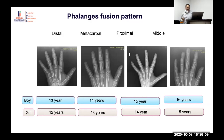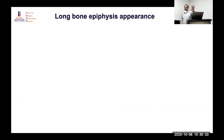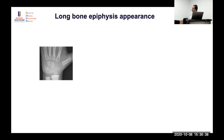Ninety-nine percent of growth is complete by around fourteen years in girls and sixteen years in boys. For long bone assessment, the radius and ulna are relevant for determining final height. The ulna epiphysis starts appearing after five years of age, so initially only the radius is present.